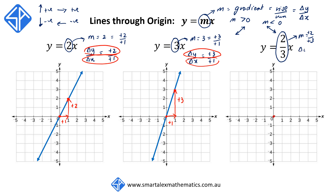So Δy over Δx equals plus 2 over plus 3. Starting at the origin, we move horizontally towards the right by 3 units (plus 3), and up vertically by 2 units (plus 2) to get to the next point.